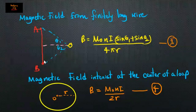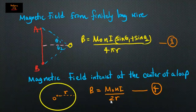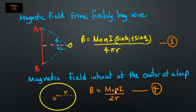Moving into the fourth equation: magnetic field intensity at the center of a circular loop. Here, B equals mu-naught n I over two r, where r is the radius and n is the number of turns in the loop.